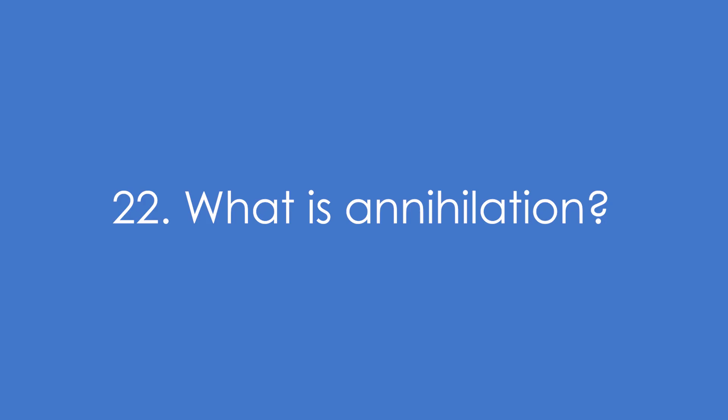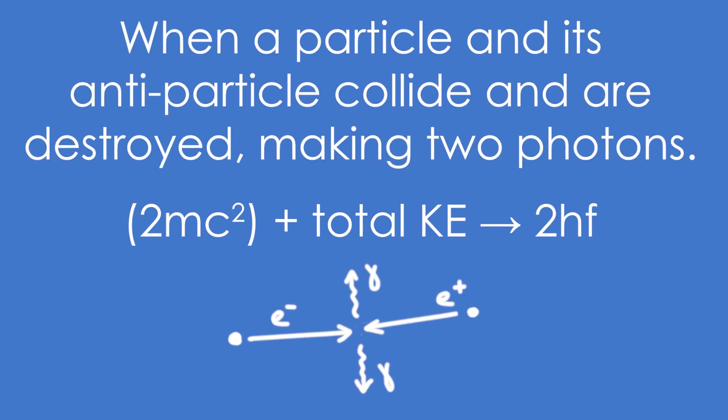22. What is annihilation? It's when a particle and its antiparticle collide and are destroyed, making two photons. That means that two lots of MC squared plus whatever kinetic energy they had, gets turned into two lots of HF. HF being the energy of a photon.